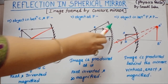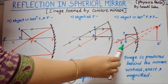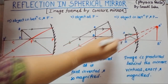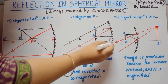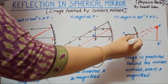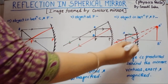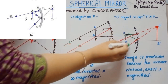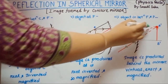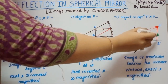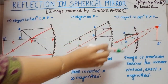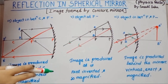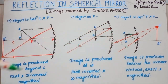The last case for the concave mirror: object is in between focus and pole. Consider one incident ray parallel to the principal axis — after reflection it goes through focus. Another incident ray goes through the pole and obeys the laws of reflection. These two reflected rays diverge, but appear to come from one point behind the mirror, where the image is produced. That image is virtual, erect, and magnified — larger than the object.